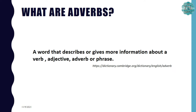First, let's look at adverbs definition. According to the Cambridge Dictionary, an adverb is a word that describes or gives some information about a verb, an adjective, an adverb itself, or a phrase. In this chapter, we are going to learn three types of adverbs: adverbs of time, adverbs of place, and adverbs of frequency.